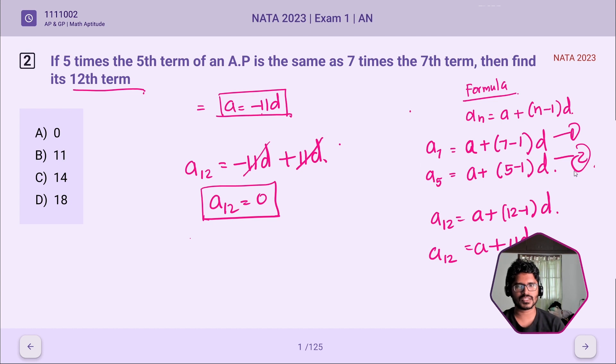The solutions given are option A: 0, option B: 11, option C: 14, option D: 18. So option A, 0, is the right answer.